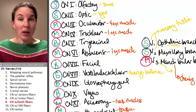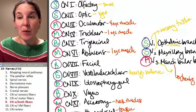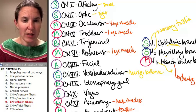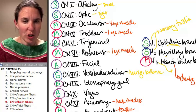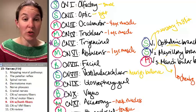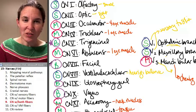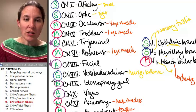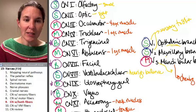Look at all of my nerves that have both types of information. Trigeminal, and we know that's because of the mandibular branch of trigeminal. Facial, glossopharyngeal, and vagus.